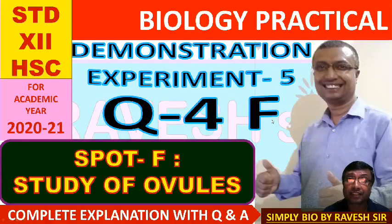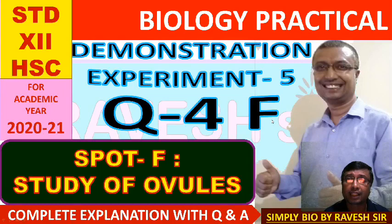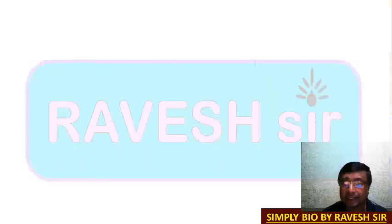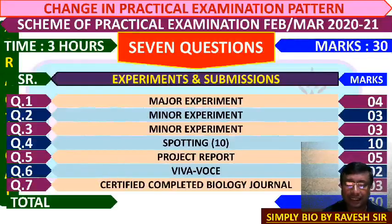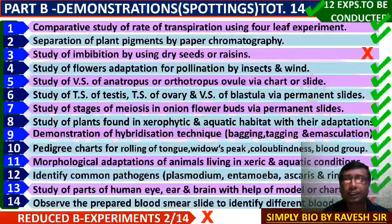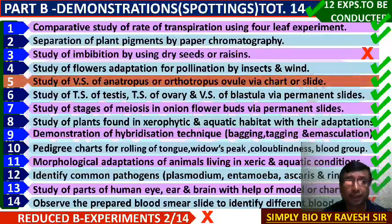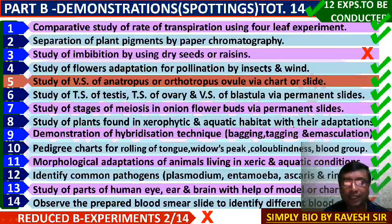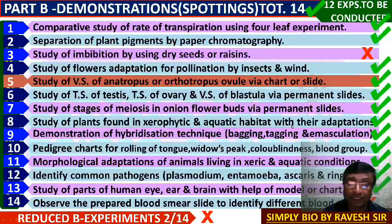Hello friends, welcome back to my channel. We are going to continue with the biological practical — demonstration experiment number five, which will be asked as spot F. That is the study of ovule, complete with expression, question and answer, and the comment for the actual exam. You can see this is the practical exam pattern from spotting to study.